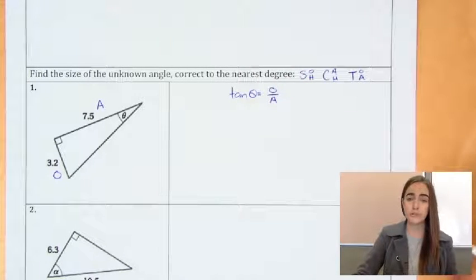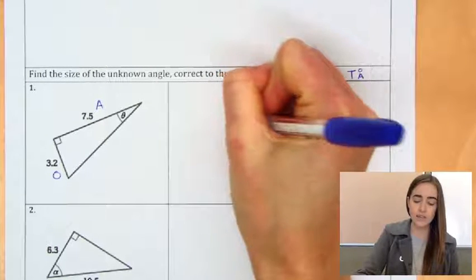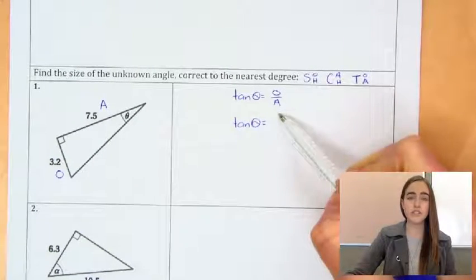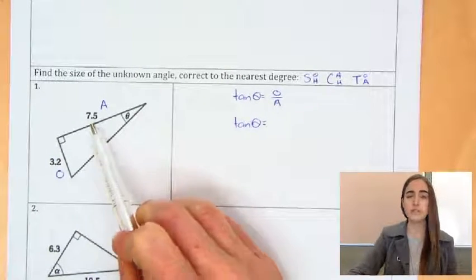And then we'll fill in what we know. So we don't know theta yet, so we're still going to have tan theta. But opposite over adjacent is going to be 3.2 over 7.5.